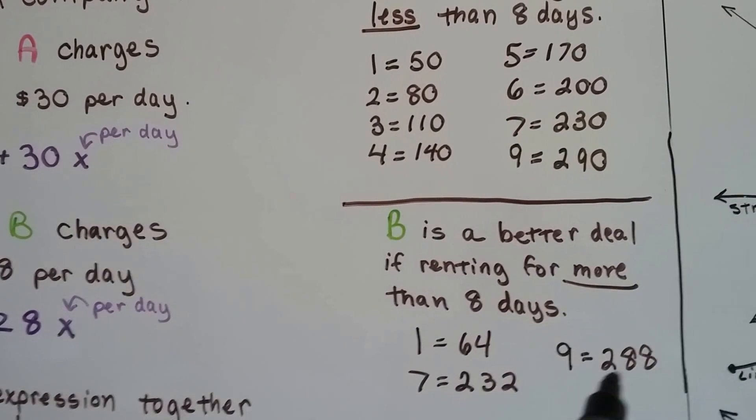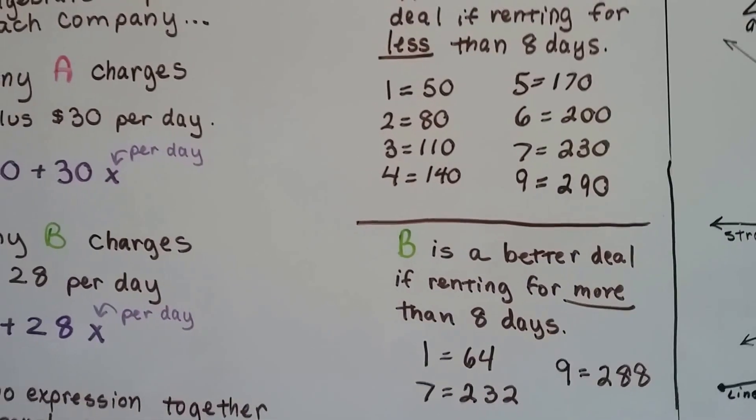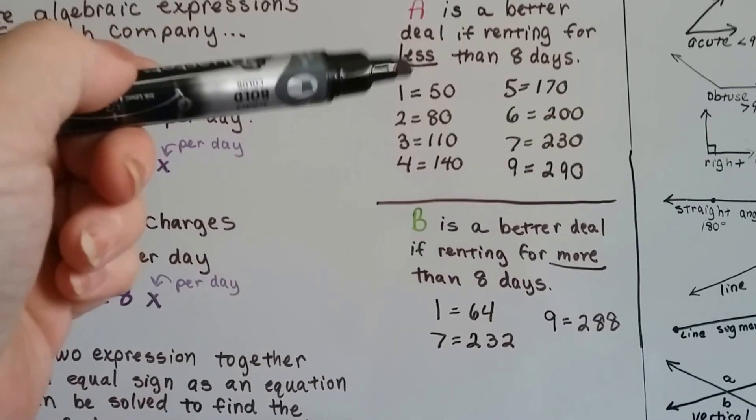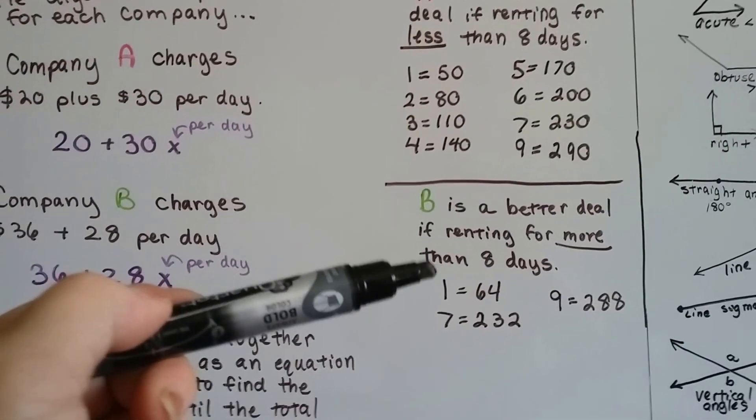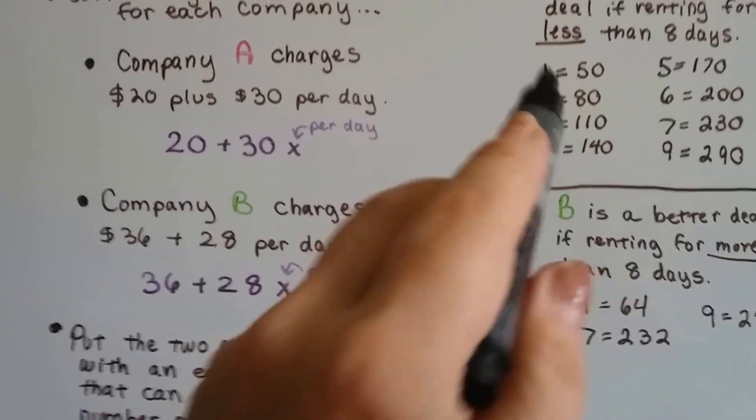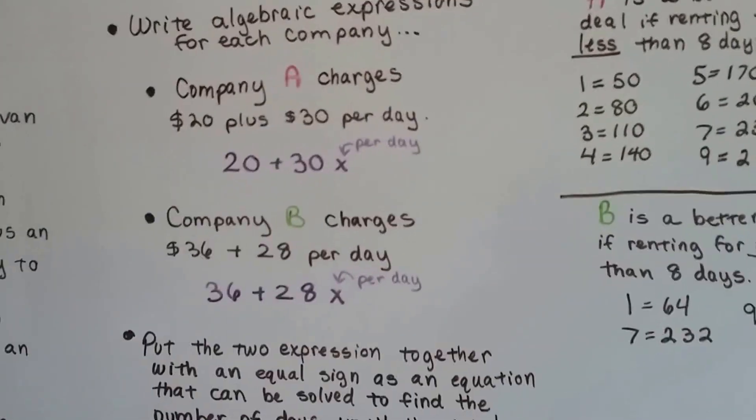So, if you're going to rent for less than 8 days, Company A is a better deal. If you're going to rent for more than 8 days, Company B is a better deal. See? So, he should use Company A and get that sofa from his mother's house.